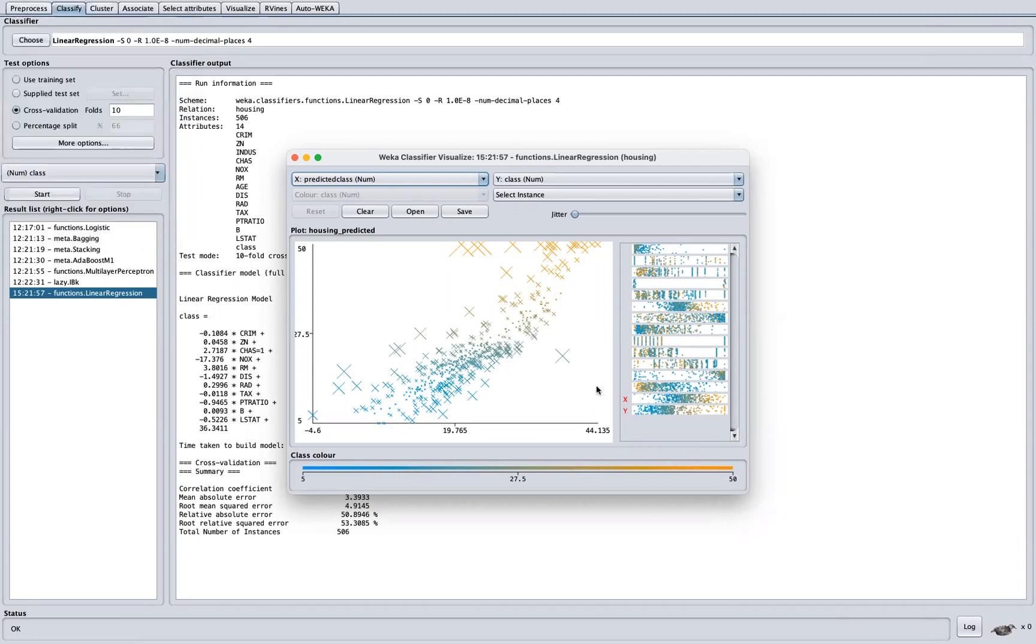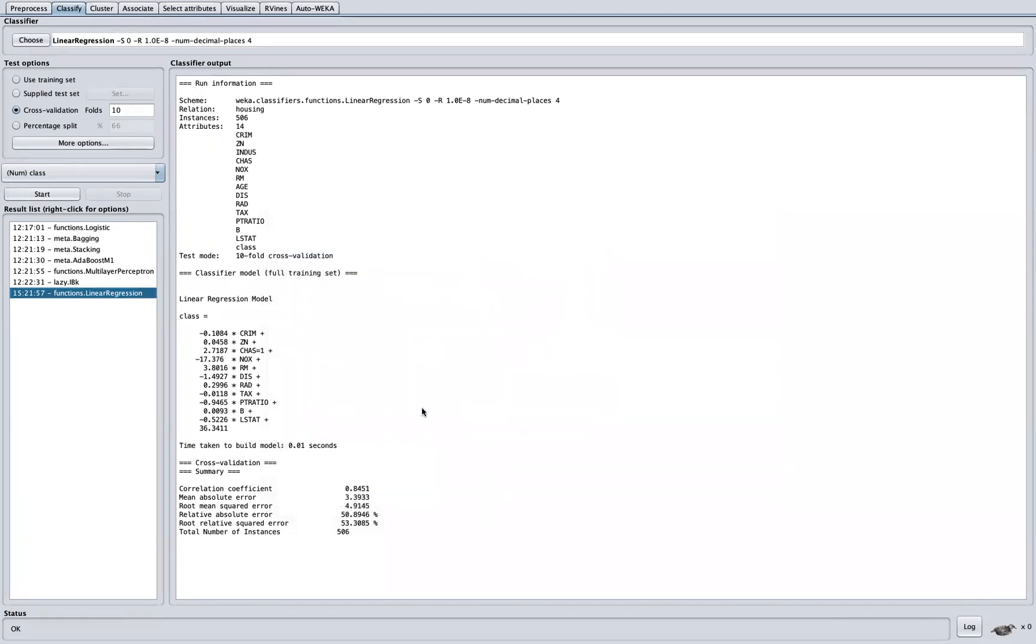So this could be a very useful plot to just see how the errors are distributed between your predicted and actual values. And remember, this is just a linear regression for housing dataset.